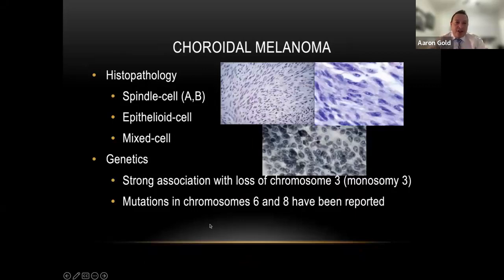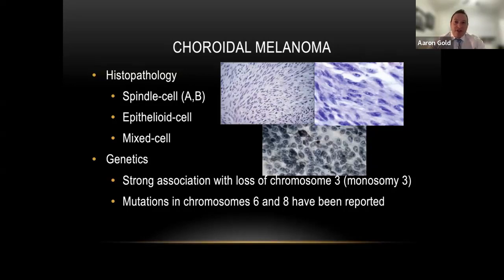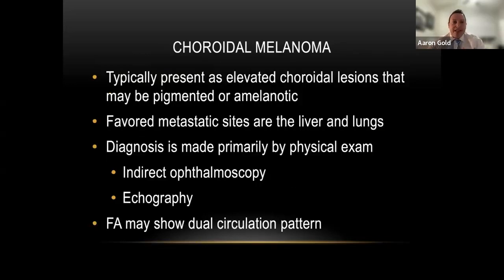The histopathology of these lesions is usually a combination of spindle cells and epithelioid cells — the mixed type is the more dangerous. The loss of chromosome 3 has a much higher propensity for melanoma and a more dangerous type. Not all uveal melanoma is the same; some are more dangerous than others. These lesions typically present as elevated choroidal lesions that are usually but not always pigmented. When they spread, they go to the liver 90% of the time, then the lungs, then connective tissue. In the past, metastasis meant death, but that's changing — metastasis no longer necessarily correlates with mortality.